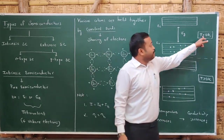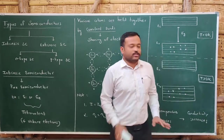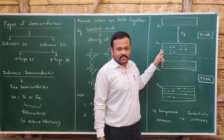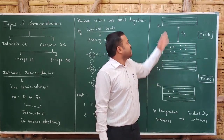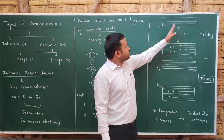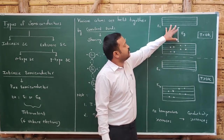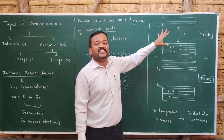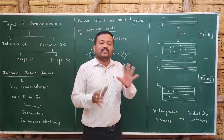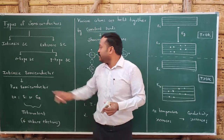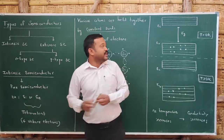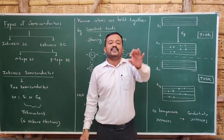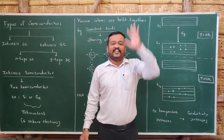At temperature equal to 0 Kelvin, all the electrons are in the valence band and there are no electrons in the conduction band — which is what we see in insulators. We can conclude that an intrinsic semiconductor at 0 Kelvin behaves as an insulator.